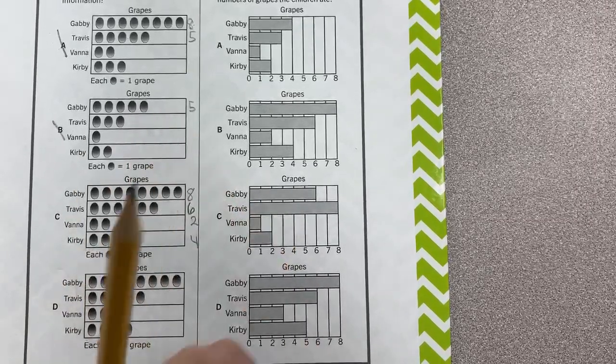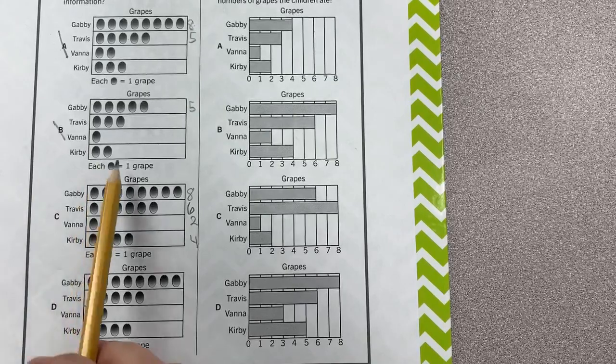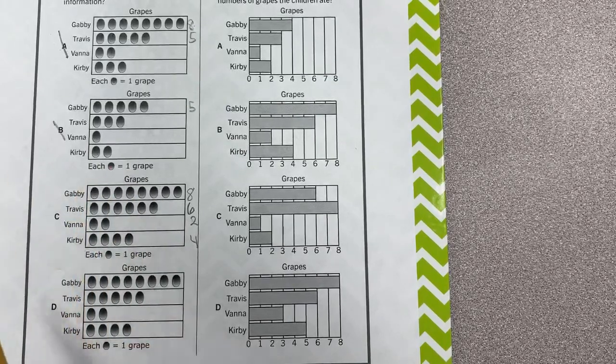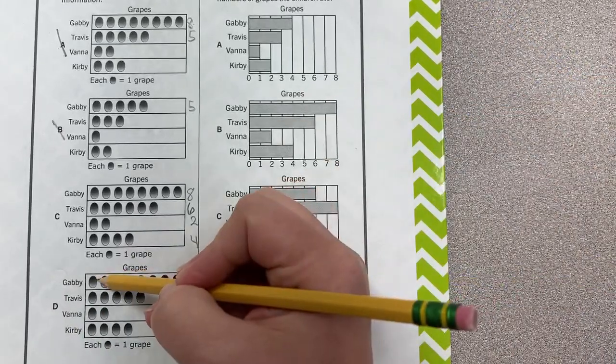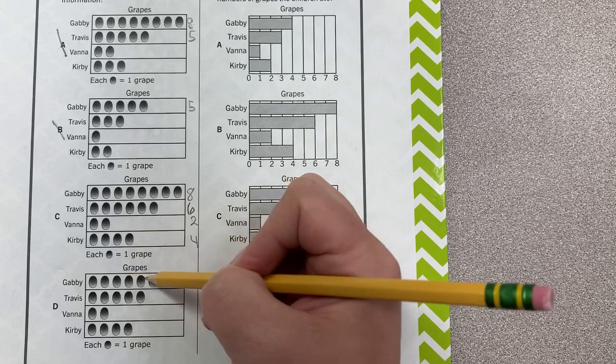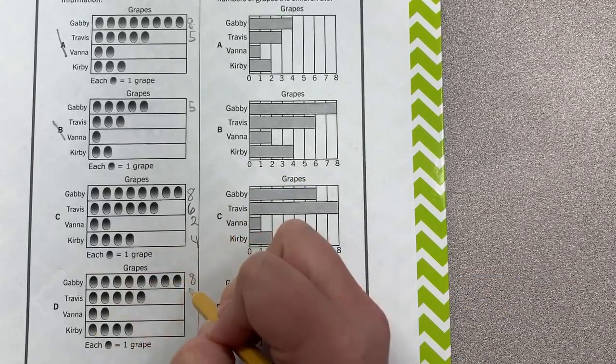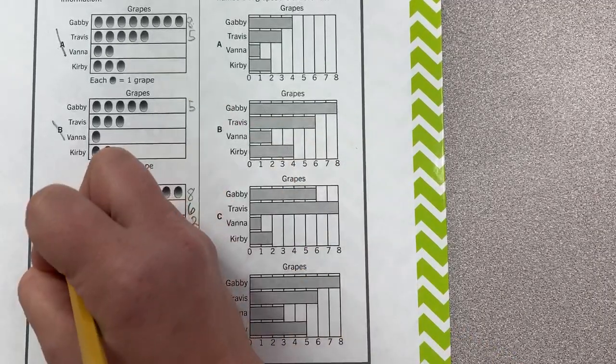But just in case I made a mistake, you never know. Maybe I got too excited, counted too quickly. Maybe I accidentally skipped over one. We better check this last one. One, two, three, four, five, six, seven, eight. Okay. One, two, three, four, five. Nope, there's the mistake. Okay, so we know that C for sure is correct.